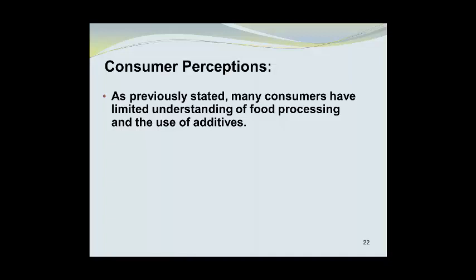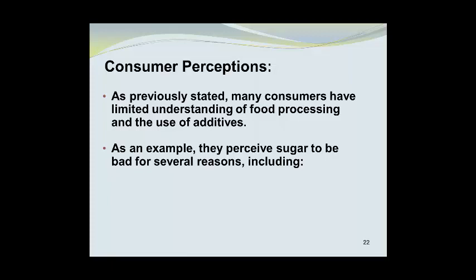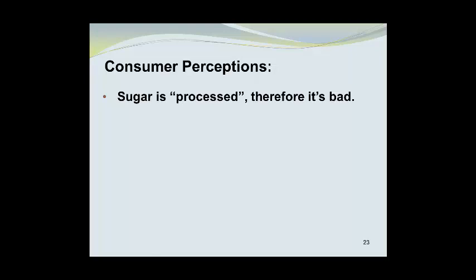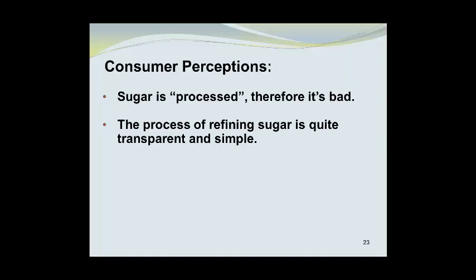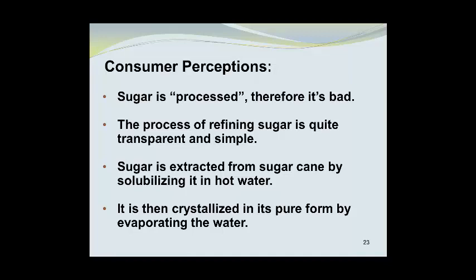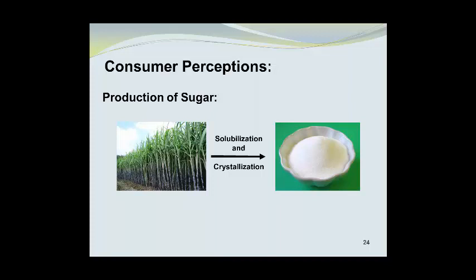As previously stated, many consumers have limited understanding of food processing and the use of additives. For example, they perceive sugar to be bad — including that sugar leads to obesity and associated medical issues, and some even say it causes diabetes. However, the process of refining sugar is quite transparent and simple: sugar is extracted from sugarcane by solubilizing it in hot water, and it is then crystallized in its pure form by evaporating the water. Here we see sugarcane on the left, and through a process of solubilization and crystallization, we get the refined sugar in the small dish in the right-hand photograph.